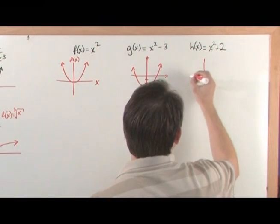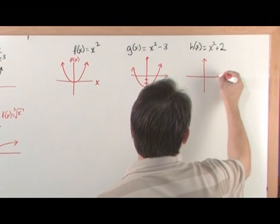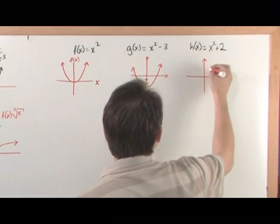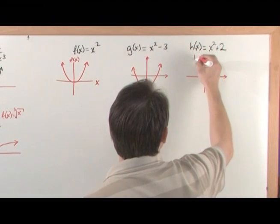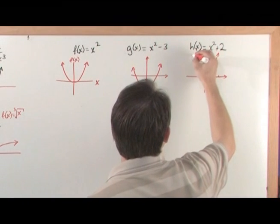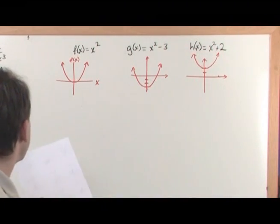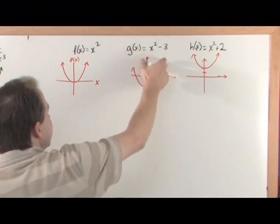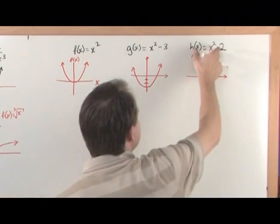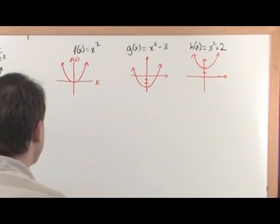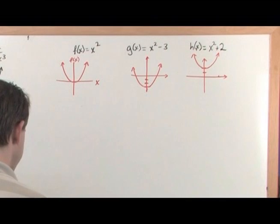Same kind of thing. We have our graph, we know what the parabola looks like and for every point we're adding two points up. So, every point goes up. So, you see what's going on here. You subtract off a constant value, drags it down, you add a constant value, it shifts it up. So, that's the shifting up and shifting down that we had talked about.